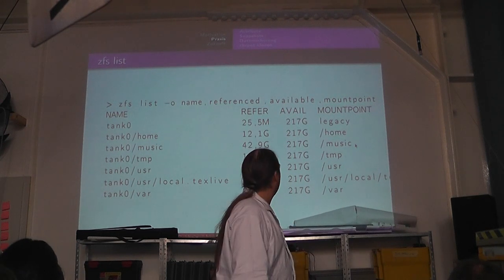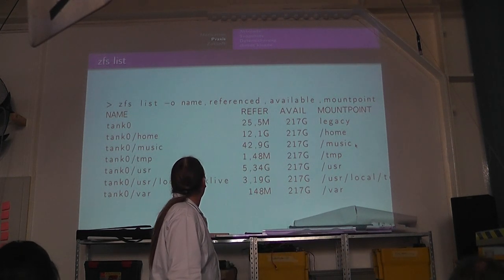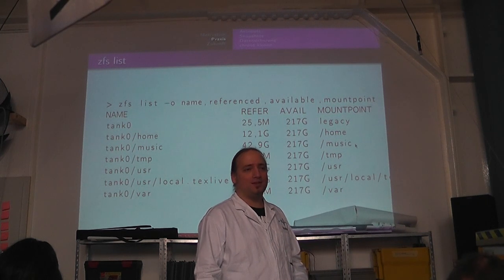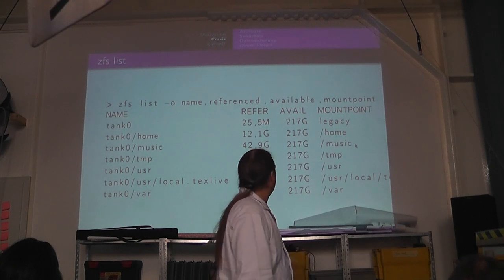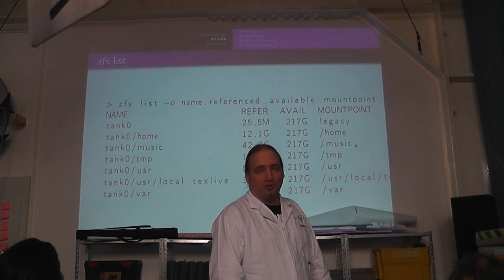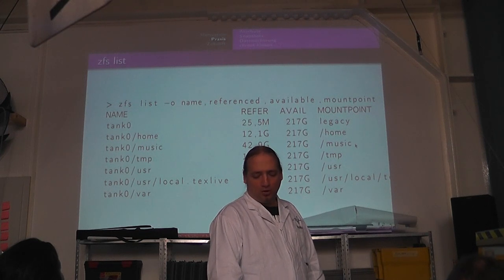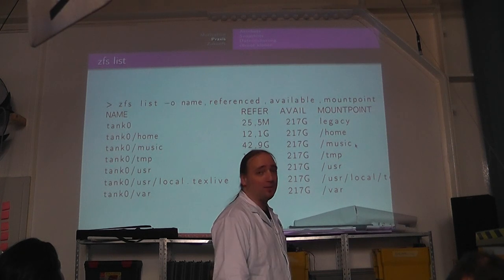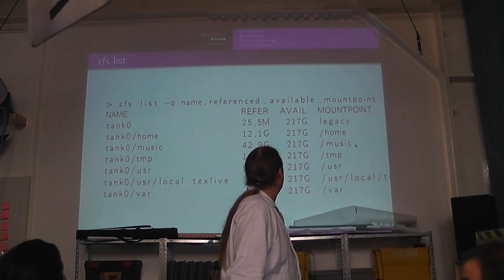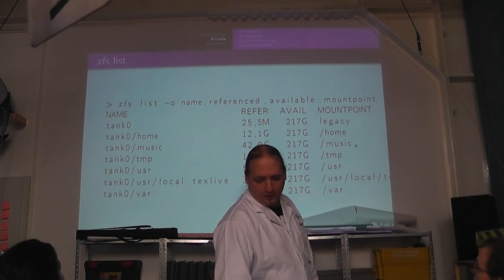Da habe ich ein paar Beispiele mal abgetippt. Hier habe ich mal ein ZFS-List ausgegeben, also die Datasets, die bei mir auf dem Rechner momentan vorhanden sind. Tank0 ist der Z-Pool, den ich habe, und Tank0 ist auch gleichzeitig ein Dataset – also es ist der Pool und das zugrunde liegende Dataset, bei mir das Root-Verzeichnis. Und dann bauen sich halt so meine Partitionen – Home, dann habe ich eine Partition für meine Musik, Temp, User, Var, was man halt so hat. Und dann habe ich noch ein Tex-Live installiert, das habe ich mir noch in ein extra Dataset gepackt. Man sieht, jedes dieser Datasets hat 217 GB zur Verfügung. Und dieser Reference-Wert sagt an, wie viel Speicherplatz davon wirklich belegt wird.